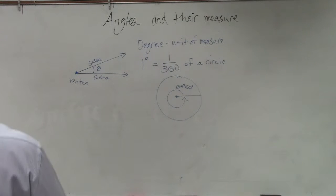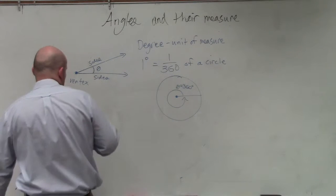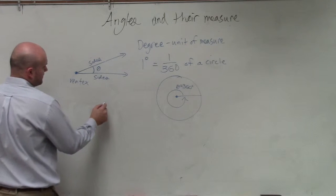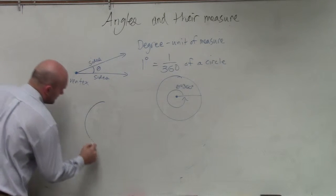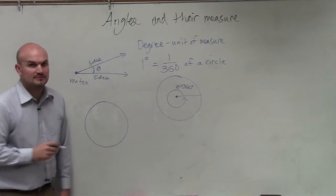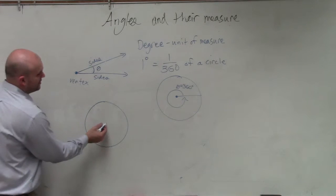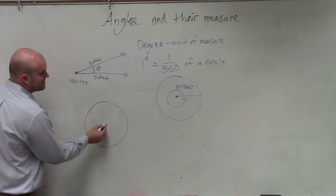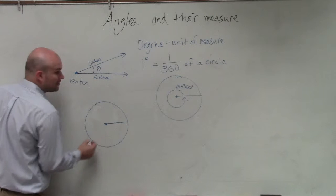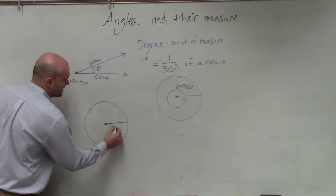The other unit of measurement we're going to talk about is what we call a radian. If we take a circle, we know that a circle has a center, and the distance from the center to the outer edge of the circle is called the radius.